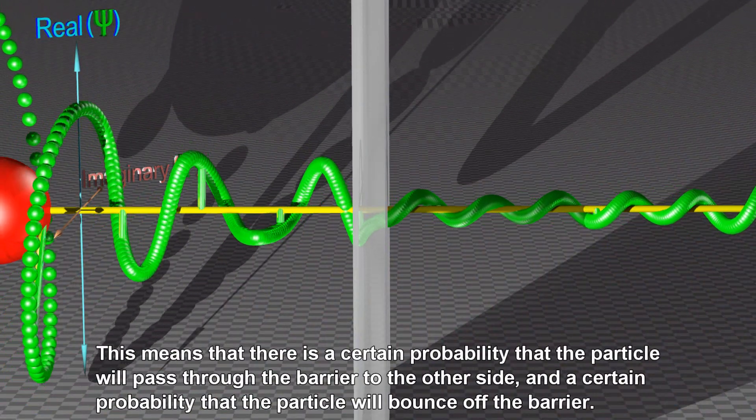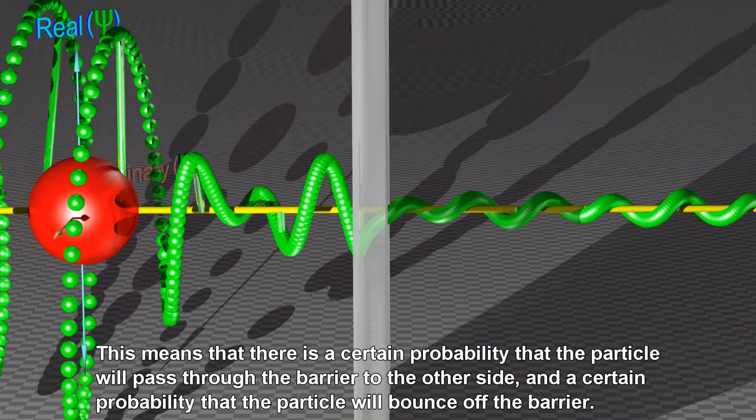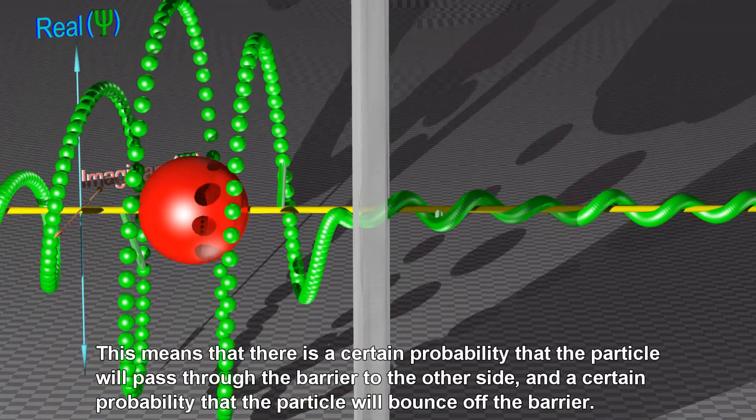This means that there is a certain probability that the particle will pass through the barrier to the other side, and a certain probability that the particle will bounce off the barrier.